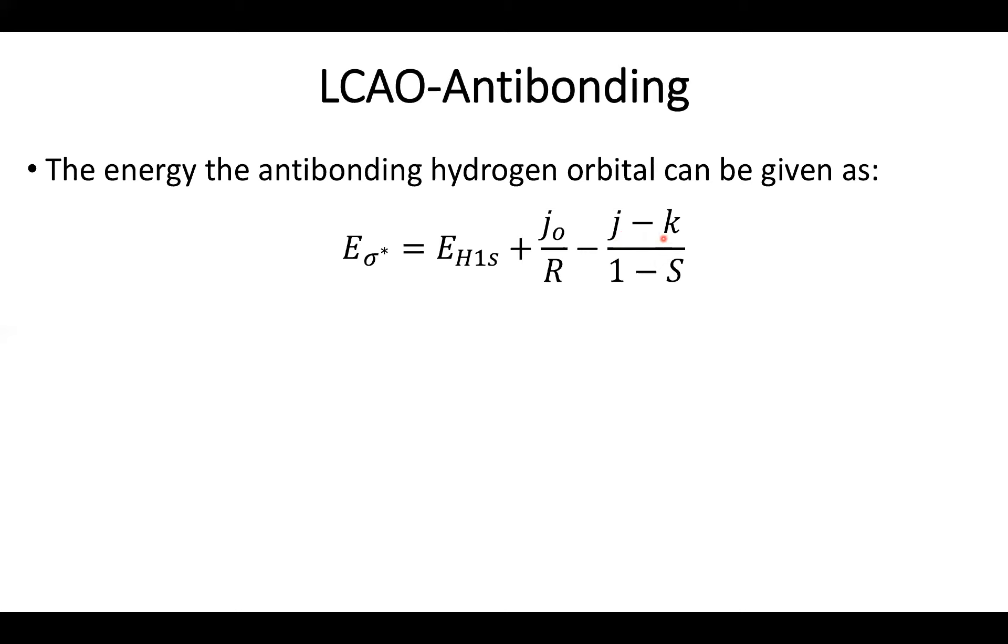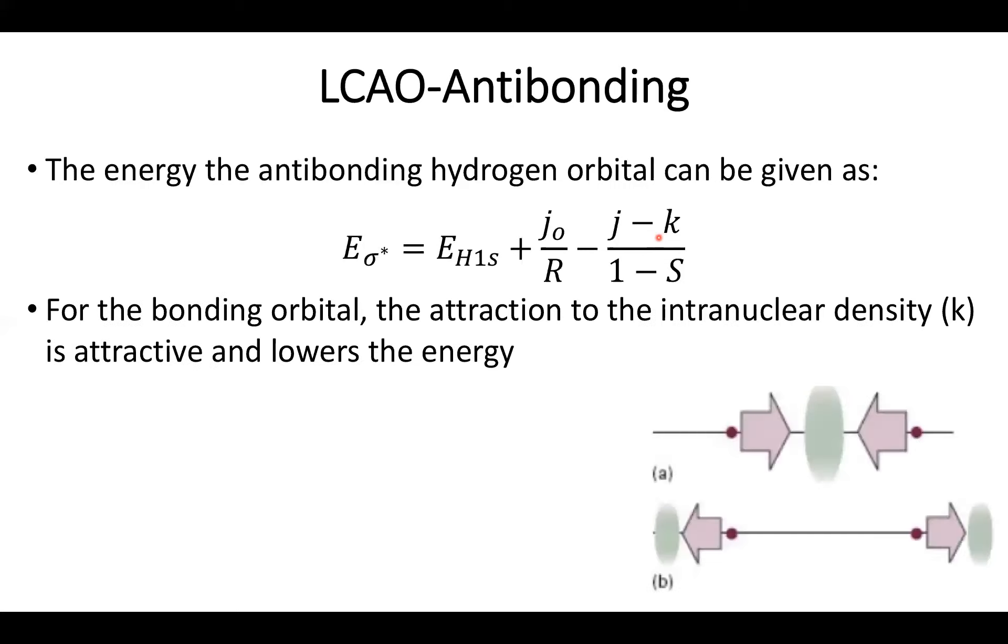But here we run into a problem. Previously my overlap density was entirely centered around the bond in between the two nuclei, which brought our molecule together. This time it's going to be shifted away to the outsides of the nuclei. So it's going to be this K term that really changes, not its value, but really its meaning. For a bonding orbital, this was an attractive term because K is the attraction energy in between the nuclei and the excess electron density. For bonding orbital, it's centered in the middle, and we have this attractive term that brings my two nuclei together.